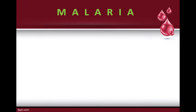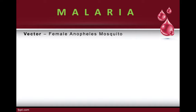Now let's focus on malaria. Malaria is also a vector-borne disease, similar to Zika, chikungunya, and dengue — but unlike those three, malaria is not a virus or bacteria; it is a parasite. Malaria is carried by the female Anopheles mosquito. Only the female feeds on human or animal blood, which she needs before she can produce or lay eggs. The causative agents of malaria are Plasmodium species.